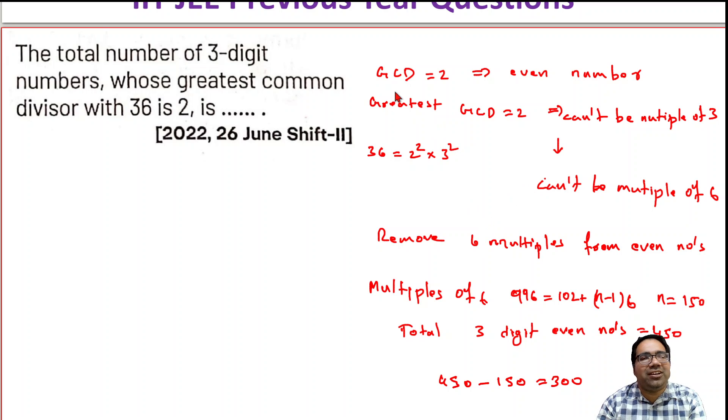So how many even numbers do we have? We're looking for 3-digit even numbers from 100 to 999. How many 3-digit even numbers are there? We have 450 3-digit even numbers. And how many multiples of 6 in these 3-digit even numbers? The first multiple is 102 and the final multiple is 996.